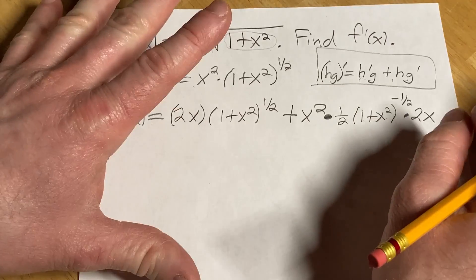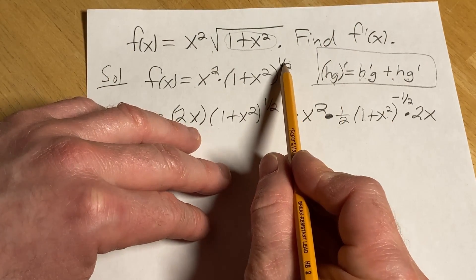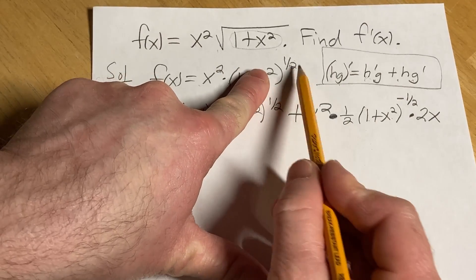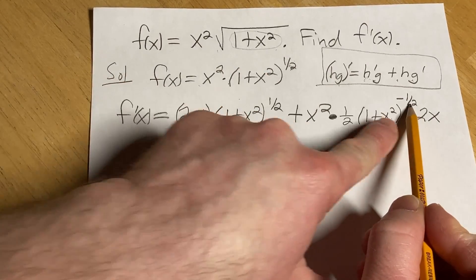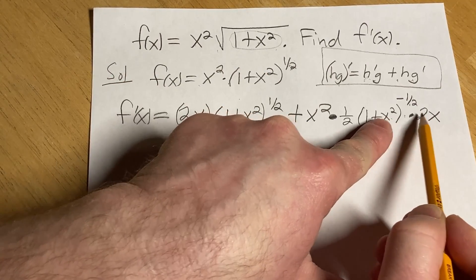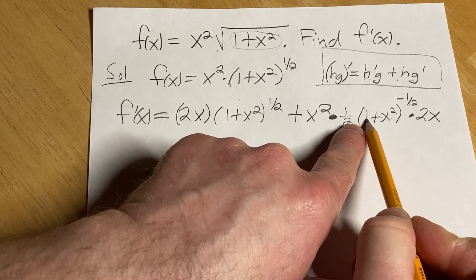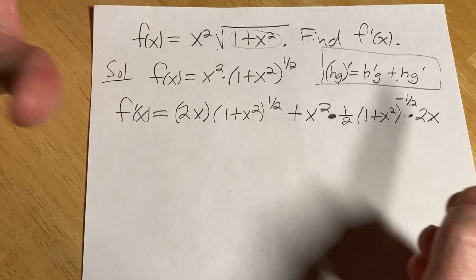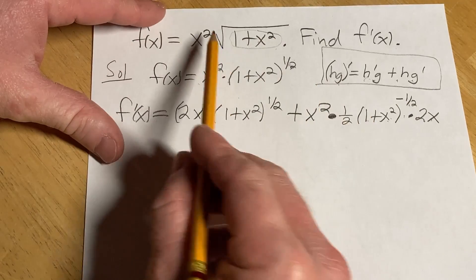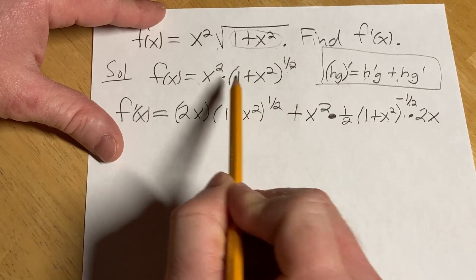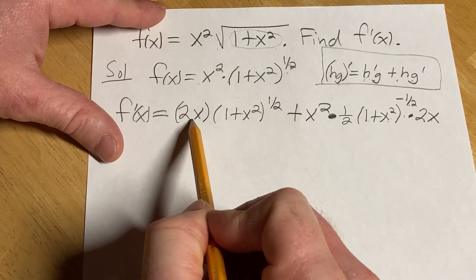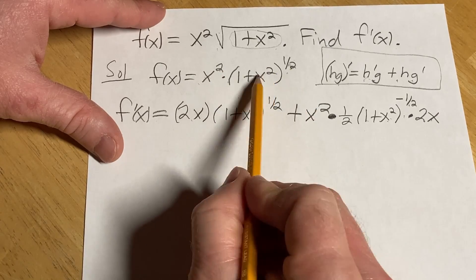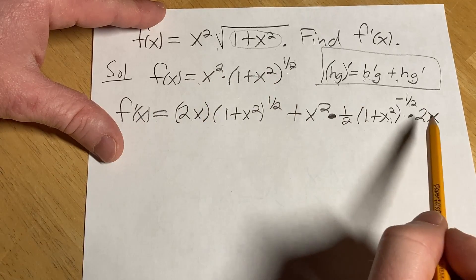So we took this derivative. We brought down the 1 half, left the inside untouched, subtract 1 from the exponent, then times the derivative of the inside. The derivative of 1 is 0, the derivative of x squared is 2x. That's the chain rule. So going over it one more time from the beginning. We started by writing this to the 1 half power. Apply the product rule. Derivative of the first times the second plus the first times the derivative of the second. And now we're in a good place. Let's clean this up a little bit.